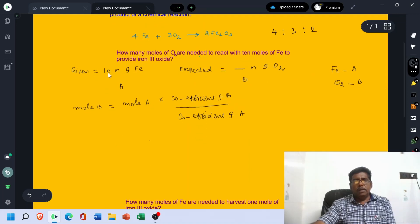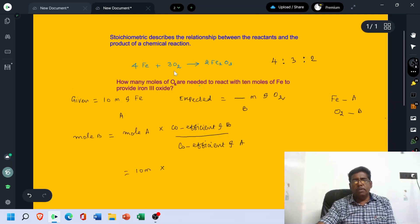See Mol A. What is A? Fe. How many moles? They are given 10 moles. That is 10 moles. Coefficient of B. Which one is B? O2. In the above equation, what is the Coefficient of O2? 3. So that Coefficient of B is 3 mol divided by Coefficient of A.